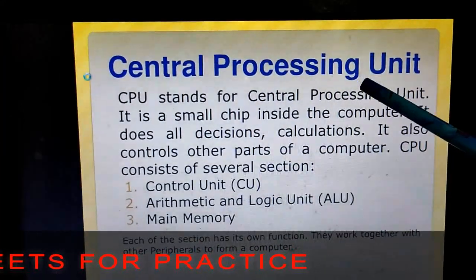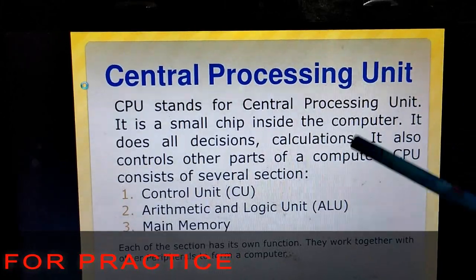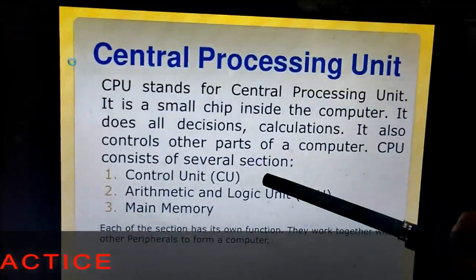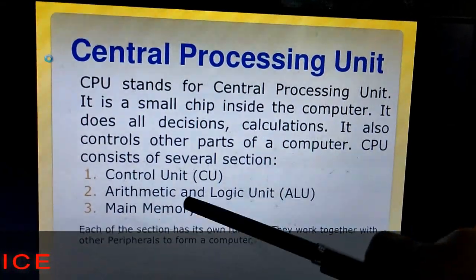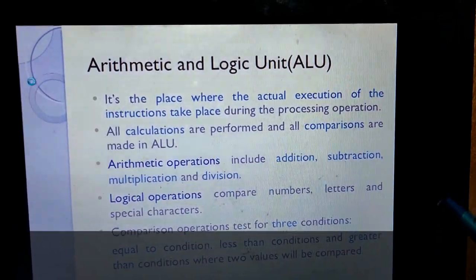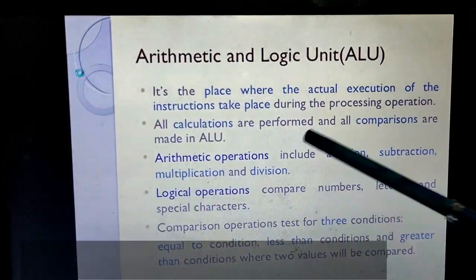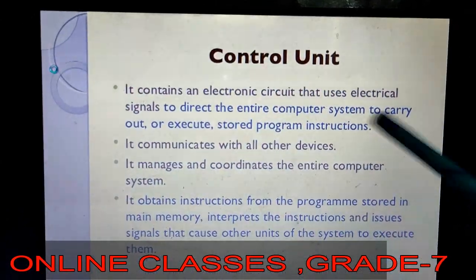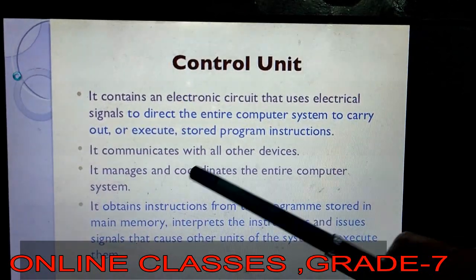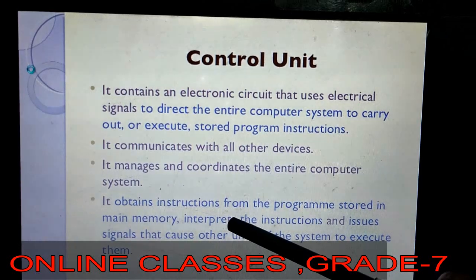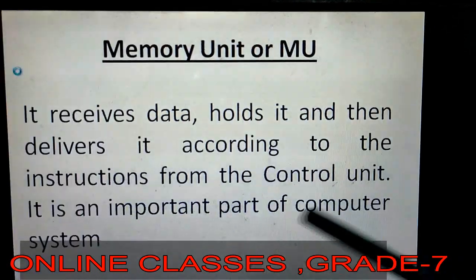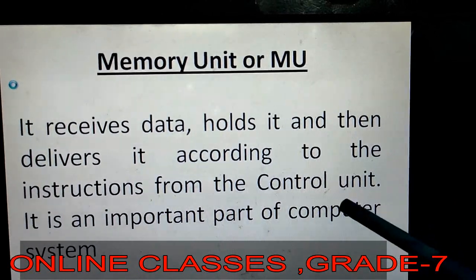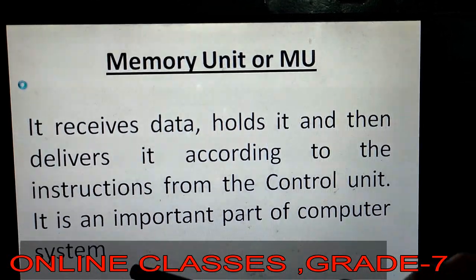Next is the central processing unit, also known as the brain of the computer, which controls all decisions and performs calculations. The main parts of the CPU are the control unit, arithmetic logic unit (ALU), and main memory. The ALU performs all comparisons, calculations, and logic operations. The control unit communicates with all other devices and obtains instructions from the program stored in main memory. The memory unit receives data, holds it, and delivers it according to instructions from the control unit.